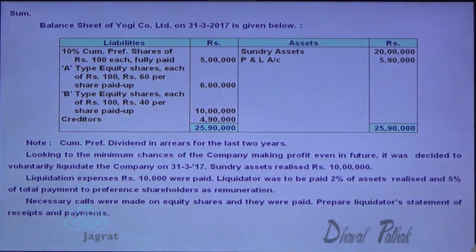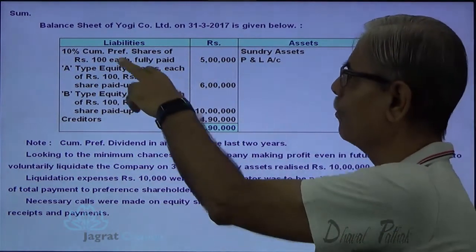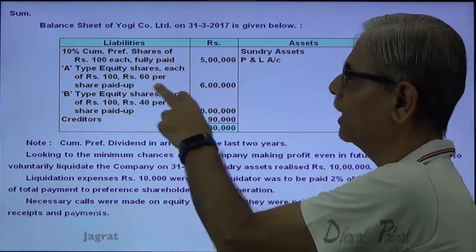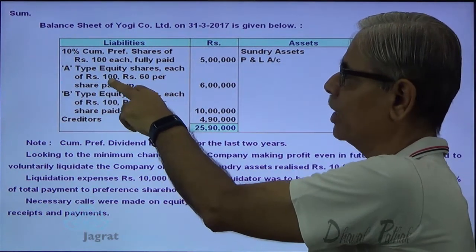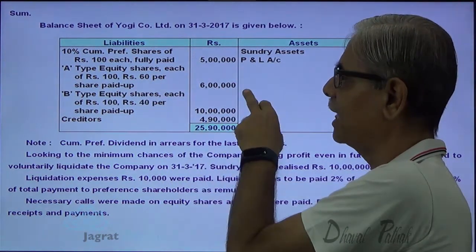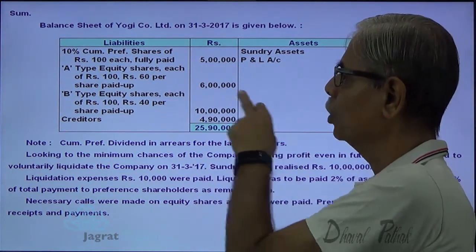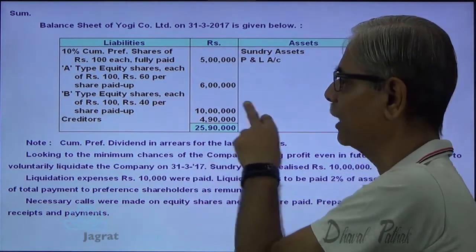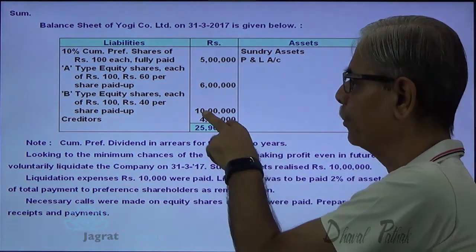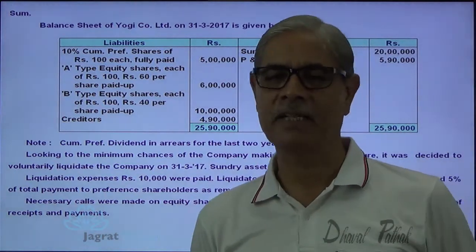The balance sheet of Yogi Limited as on 31st March 2017 is given. Cumulative preference share capital is 5 lakhs. A-type equity shares of 100 each, 60% paid up — that is 6 lakhs, giving us 10,000 shares. B-type equity shares of 100 each, 40 per share paid up — that is 10 lakhs, giving us 25,000 shares.